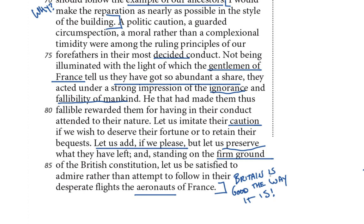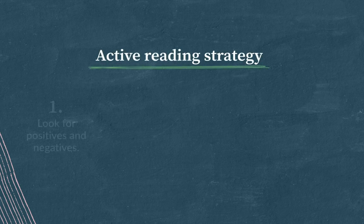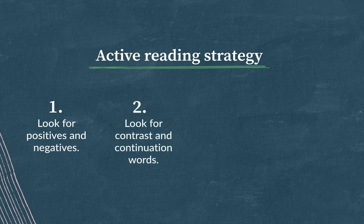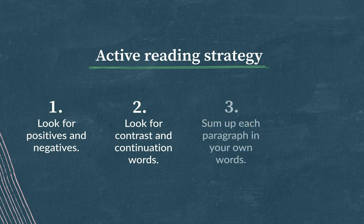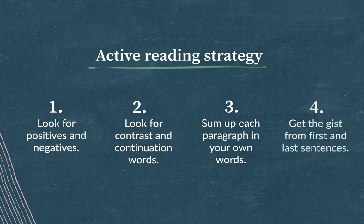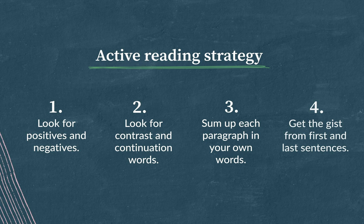Okay, we finished the passage and now I'm ready to head to the questions. Let's review the strategy. As you read, look for positives and negatives. Always look for contrast and continuation words like 'but' or 'therefore' — these words will help you get the shape of a writer's argument. Always try to sum up each paragraph in your own words. If you're feeling lost, you can usually get the gist from the first and last sentences — great for identifying topic and summary sentences. Remember not to get bogged down in fancy vocab words; an important idea will likely be conveyed multiple times in multiple ways. Stay calm, stay flexible. Good luck — you've got this.